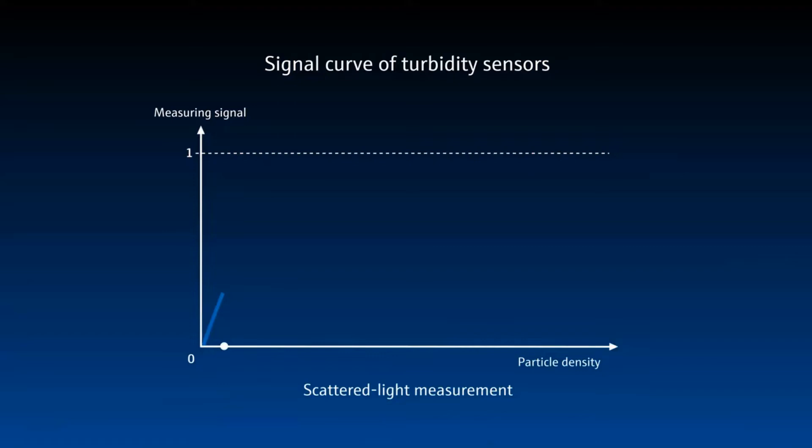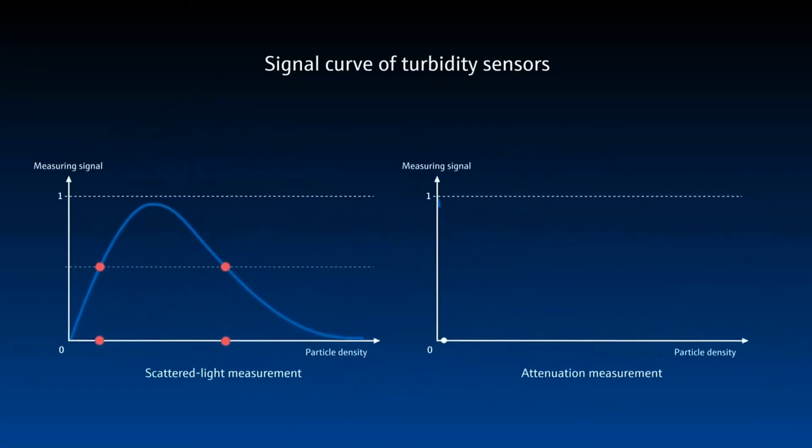The signal curve of the turbidity sensor depends upon the method used. While using the scattered light measurement, the signal curve rises up to a certain particle density because the light is scattered towards a detector. When the particle density increases further, the measuring signal weakens again because the light is scattered so strongly that the radiation no longer reaches the detector. That's why the scattered light measurement never delivers a clear result. This phenomenon doesn't occur with the attenuation measurement. The signal consistently weakens with increase in turbidity. So that's all from the principle behind the turbidity measurement.